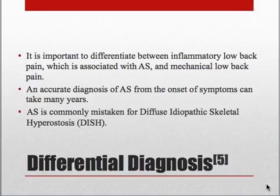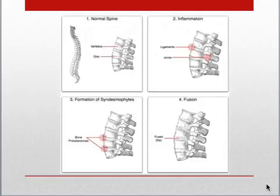AS is commonly mistaken for diffuse idiopathic skeletal hyperostosis, also known as DISH. In DISH, unlike AS, there is a lack of SI problems and more flowing and bulky ossification. In this slide, you can see a progression from a normal spine to the bony fusion that occurs in AS patients.